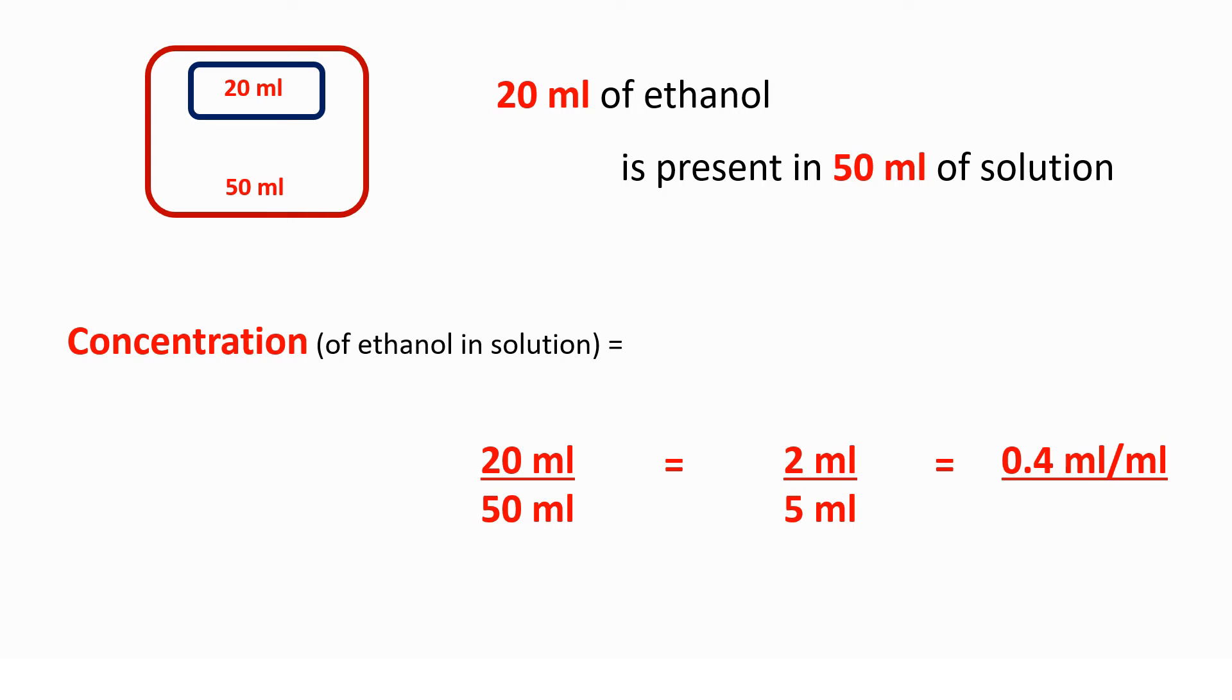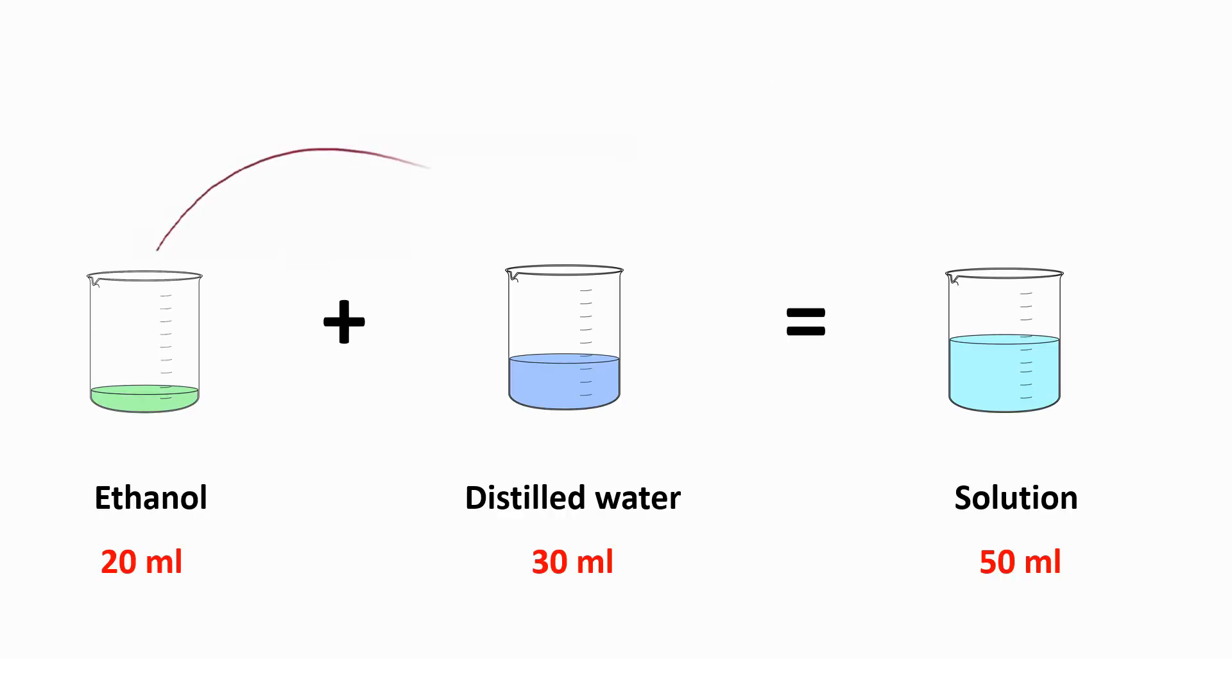Whereas, if you divide the volume of ethanol by the volume of solvent, you get the solute to solvent ratio and not the concentration. In this case, solute to solvent ratio is 20 by 30 which is equal to 2 by 3 or 0.66.